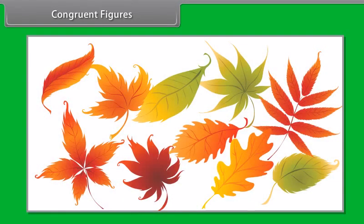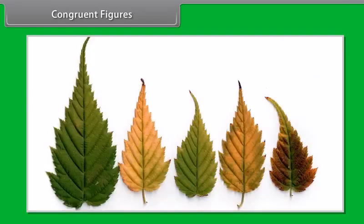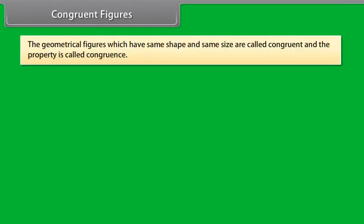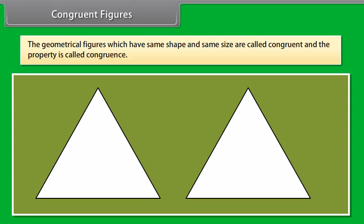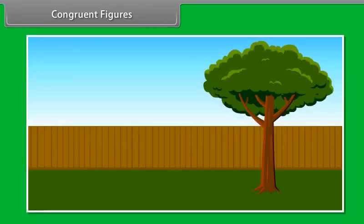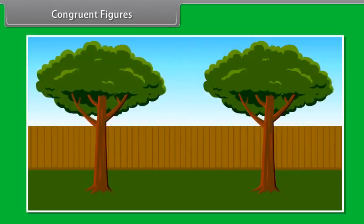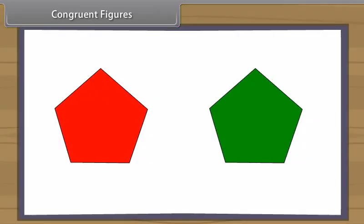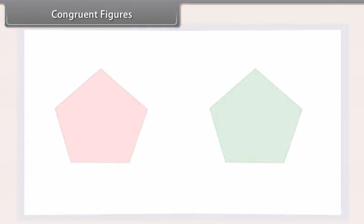You might have observed that leaves of different trees have different shapes, but leaves of the same tree have almost the same shape, although they may differ in size. The geometrical figures which have the same shape and same size are called congruent, and the property is called congruence. Congruent objects are duplicates of one another. If two mathematical figures are congruent and you cut one figure out with a pair of scissors, it will fit perfectly on top of the other figure.